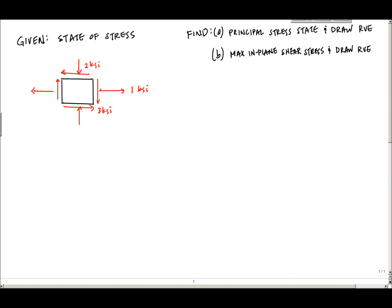One of the first things you want to do is draw that coordinate system for the representative volume element or the stress state given to you. Define your positive x direction — here I'm going with standard positive x to the right and positive y upwards, so wherever I draw x, y tags along according to the right-hand rule. I could have drawn x going upwards and y going to the left, or x going to the left and y going down. These coordinates are important in establishing directions and getting the proper sign convention for the stress.